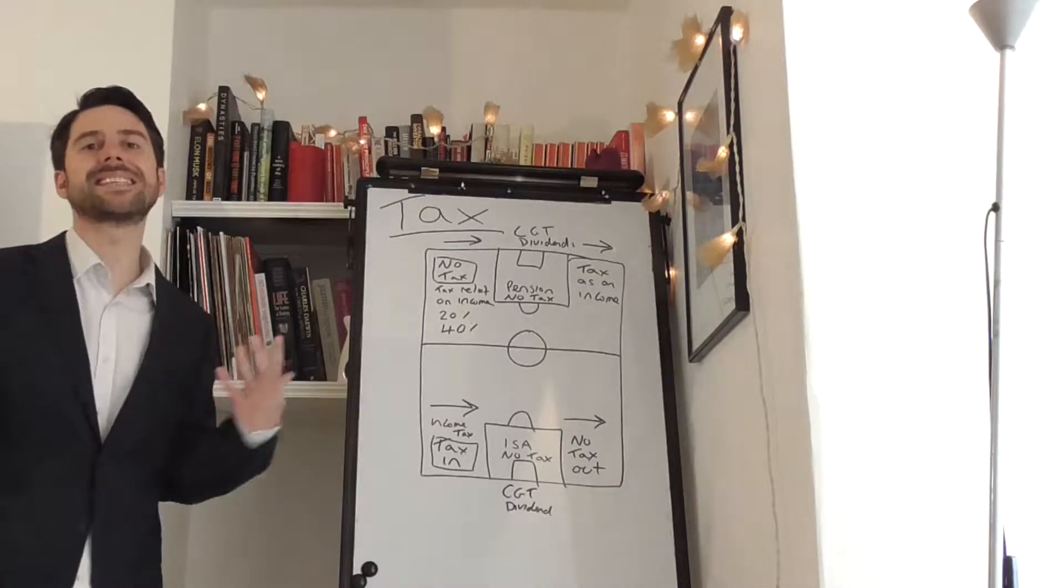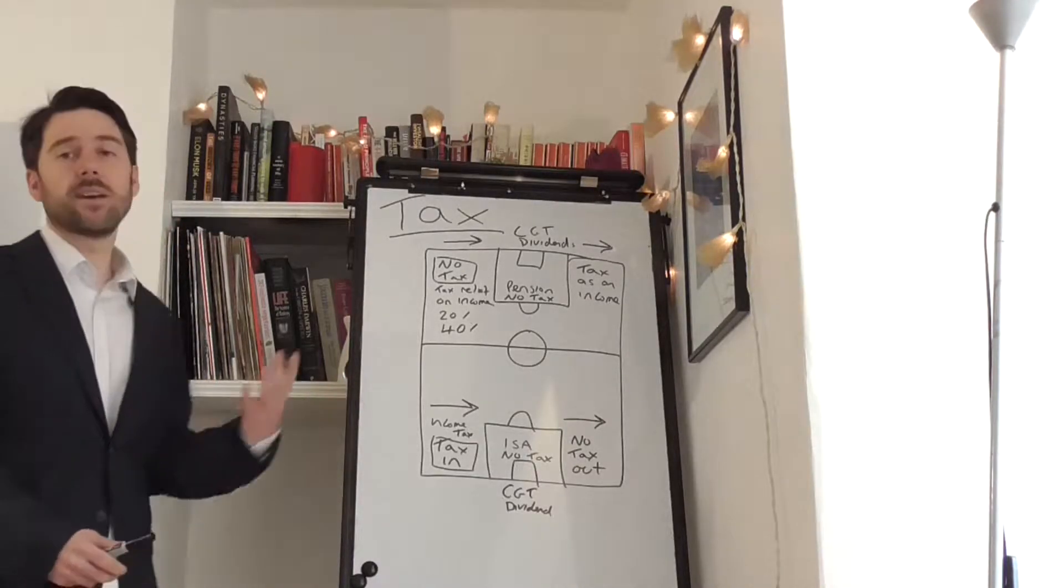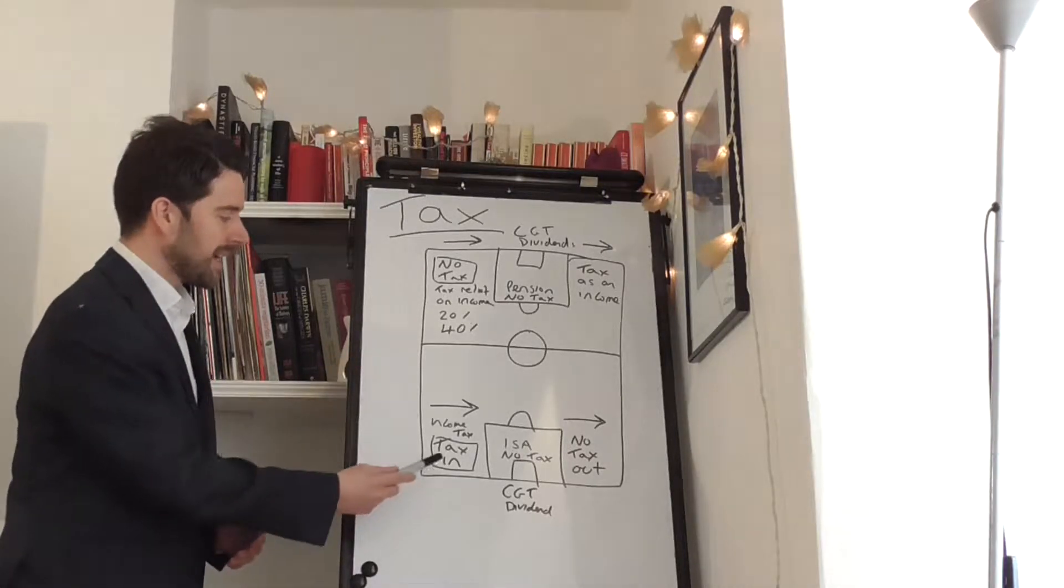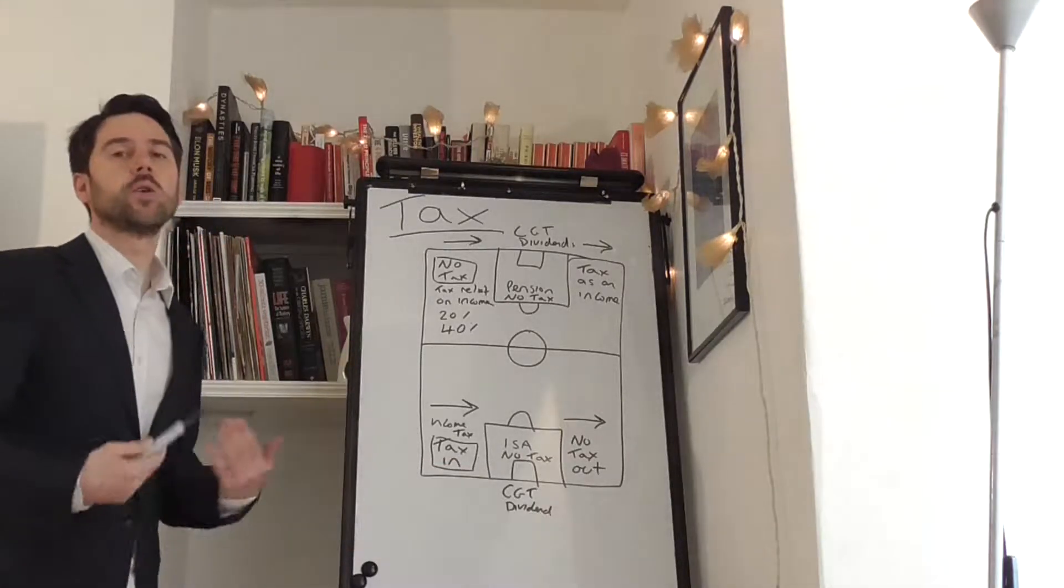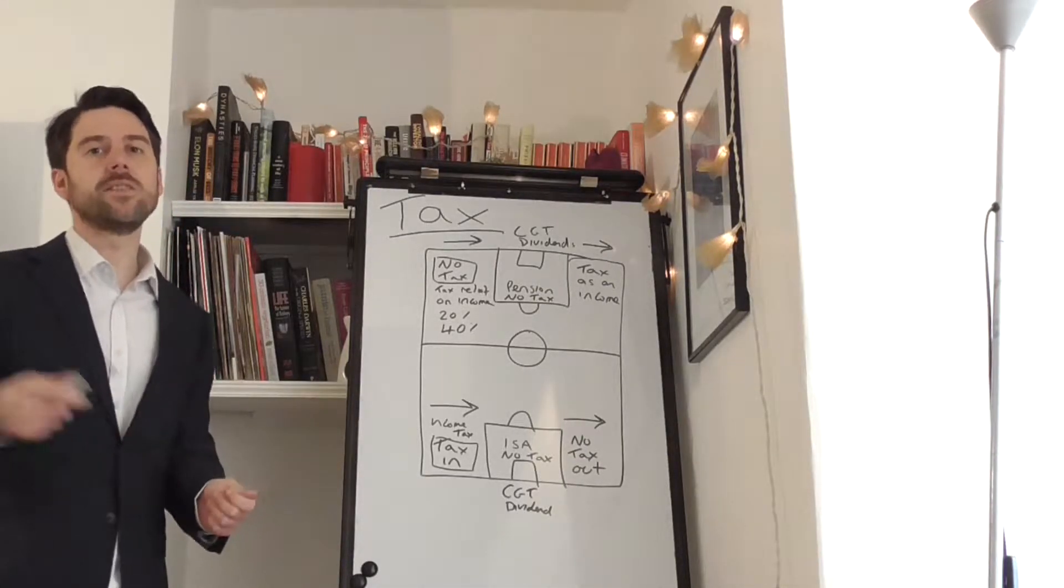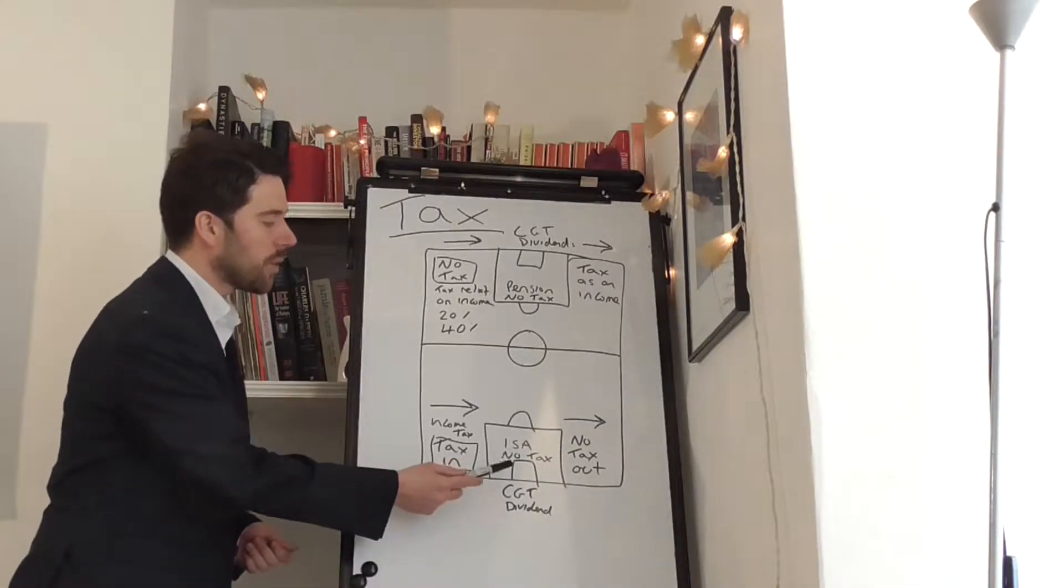Before you actually get that money physically in your hand, it's been taxed either 20%, 40%, or 45% depending on your income. With an ISA it is taxed on the way in. You're taxed when you get your money in your pay packet, then you can go and put money into an ISA. It's taxed on the way in.